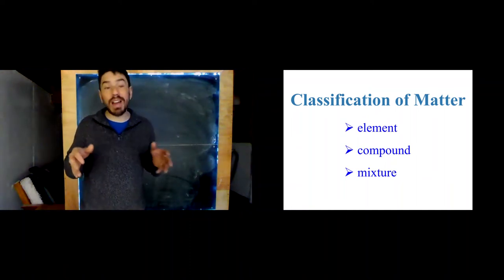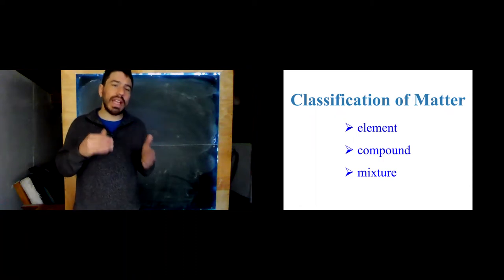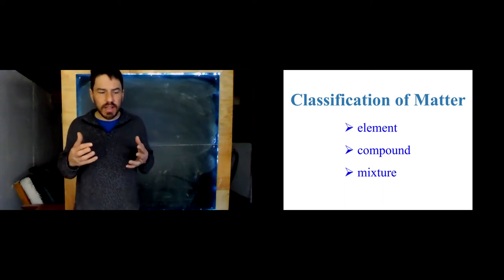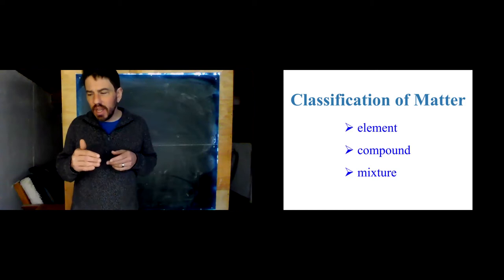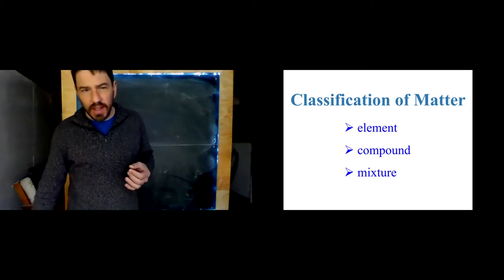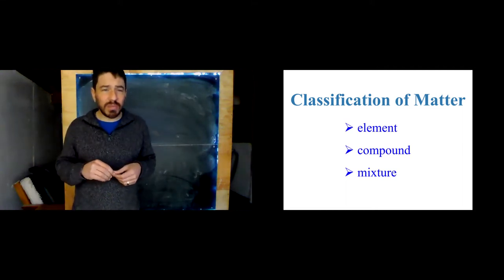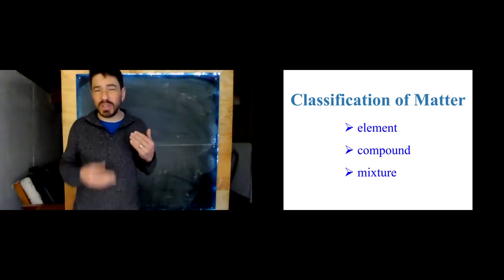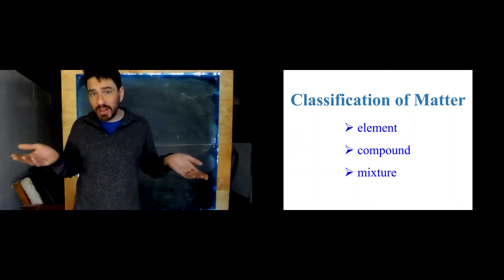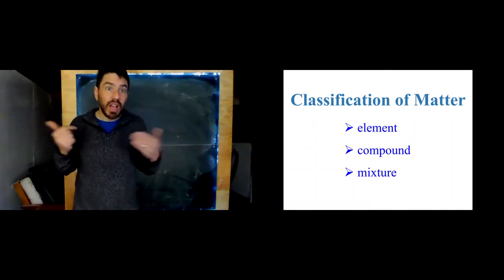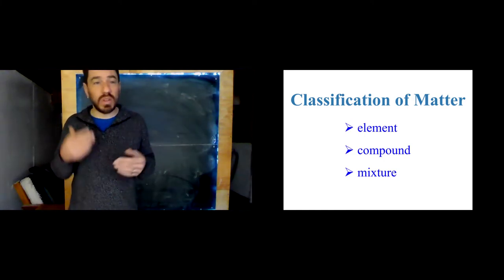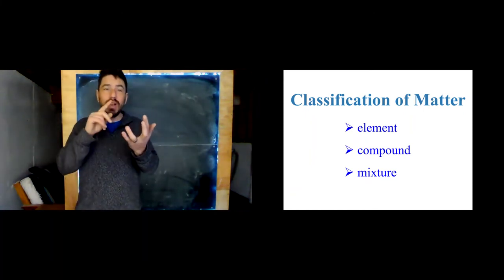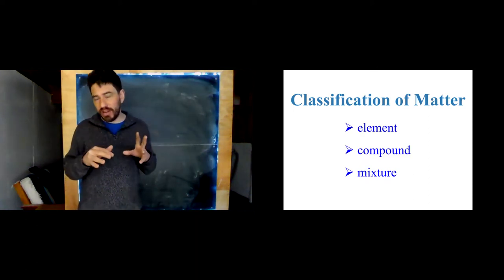Previously, we talked about how to categorize the matter that surrounds us — as atoms, molecules, or ions. Atoms, molecules, or ions tells us what is the smallest bit that still has those properties. For example, chalk is made up of molecules, baking soda is made up of ions, and argon is a noble gas whose smallest unit is an atom.